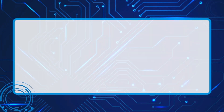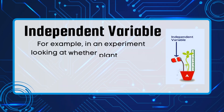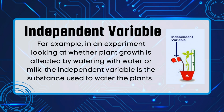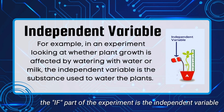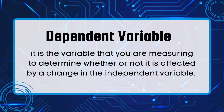Next, we have the independent variable. It is the factor that you purposely change in an experiment. For example, in an experiment looking at whether plant growth is affected by watering with water or milk, the independent variable is the substance used to water the plants. Many experiments are based on an if-and-then scenario — the if part of the experiment is the independent variable. Next, we have the dependent variable. The dependent variable is the variable that you are measuring to determine whether or not it is affected by a change in the independent variable.